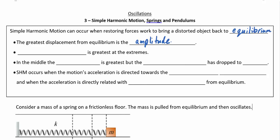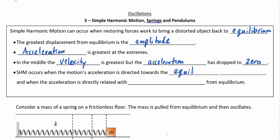This is not unlike with waves. At the amplitude — at the extremes — the acceleration is actually the greatest. When the object is furthest from its equilibrium point, that's when it's accelerating the quickest to get back. Once it reaches the equilibrium point, the velocity is at a maximum but the acceleration has dropped to zero. Simple harmonic motion specifically occurs when the acceleration is directed towards the equilibrium position and is directly related to its distortion from equilibrium — those are the two criteria.